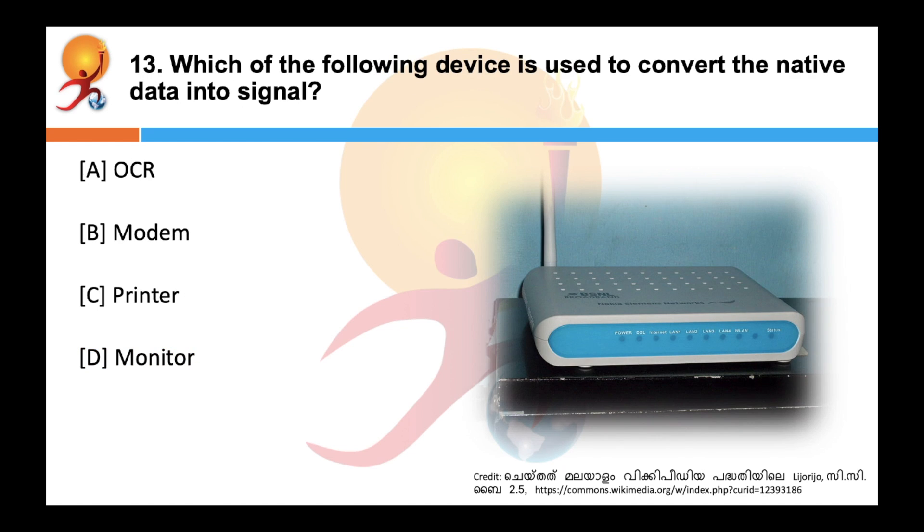Which of the following device is used to convert native data into signal? Correct answer is modem. Data cannot be sent in its native form. It is necessary to convert it into signal. This is performed with the help of a transmitter such as a modem.